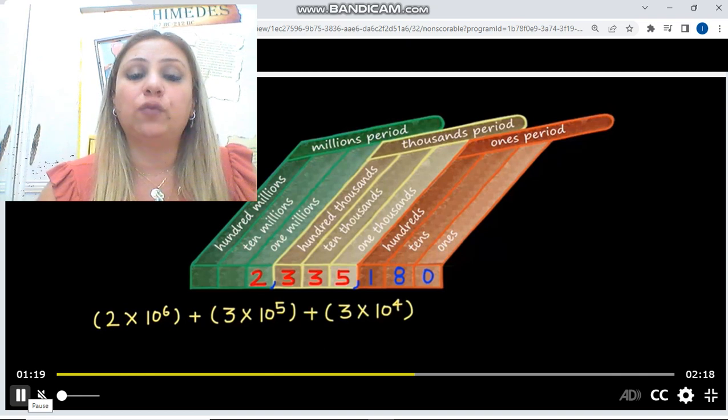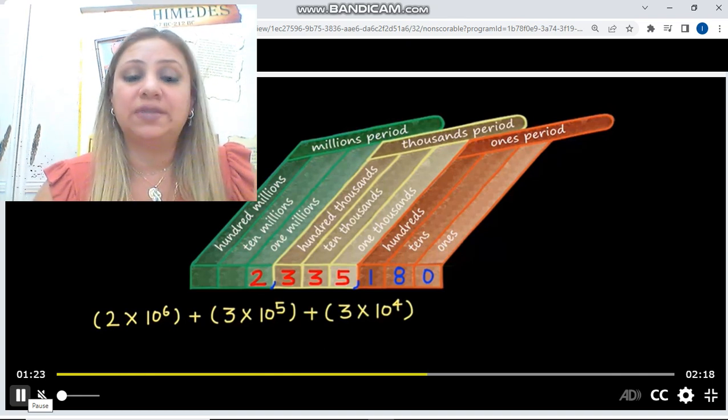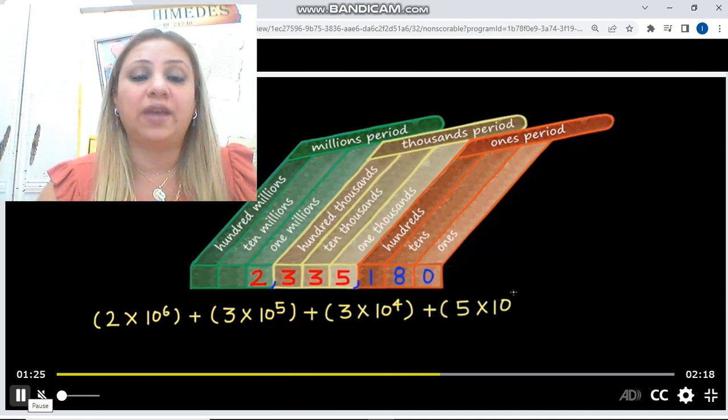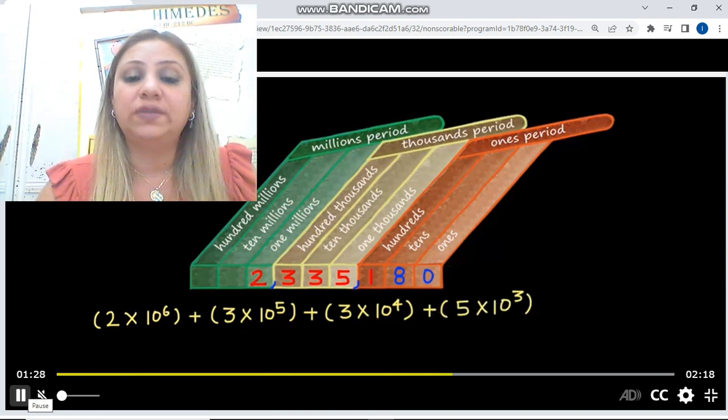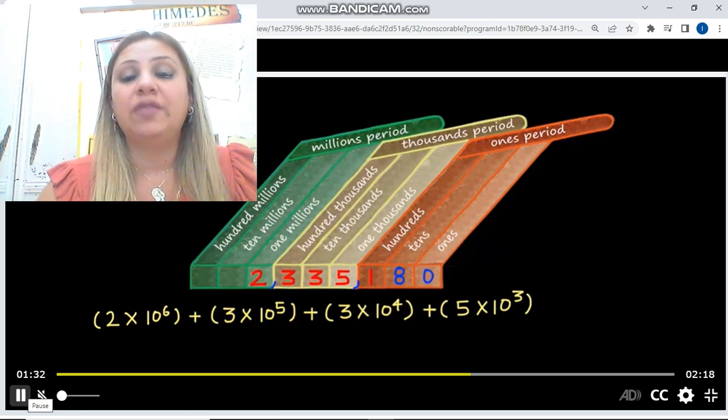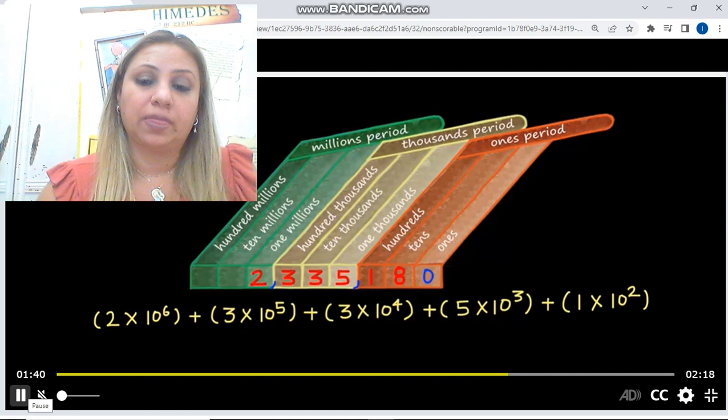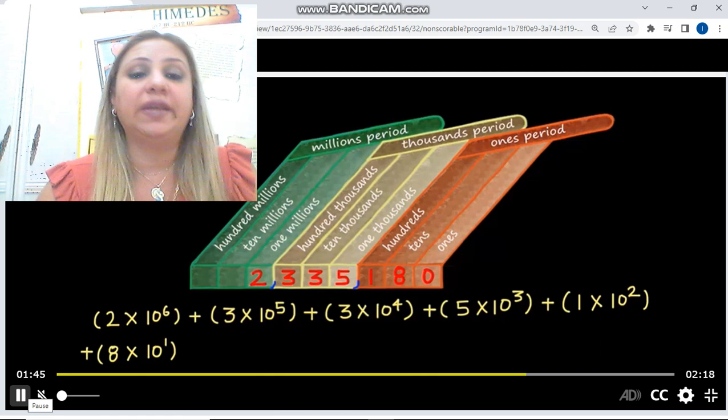Three times 10 to the fifth power, plus three times 10 to the fourth power, then five times 10 to the third power, then one times 100 or 10 to the second power, then eight times 10 to the first power, then the zero, which is in the ones place. This is called the expanded form of the number. It's when you multiply each digit by the power of 10 according to its place.